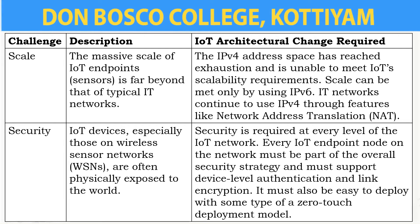Now we can check the different architectural changes required for IoT based on some of the challenges. The first one is scalability. Scalability means it is the ability of a device to adapt to the changes in the environment and meet the changing needs in the future. When coming to IoT, the data we get is through sensors and we will be getting a huge volume of data. So for data handling, we have to change the address space from IPv4 to IPv6. The IT networks are currently using IPv4.